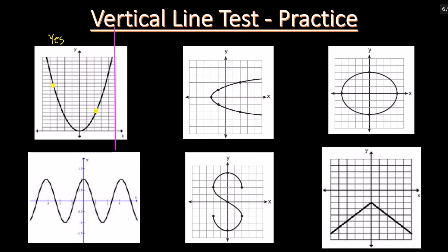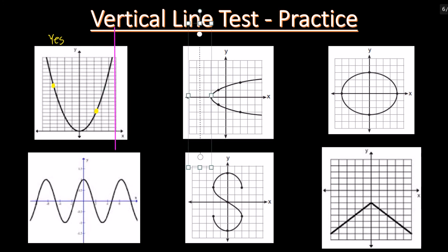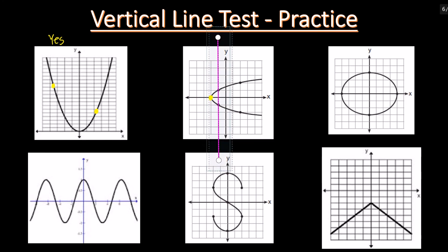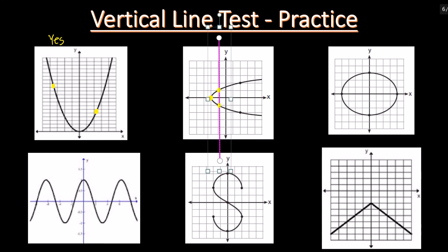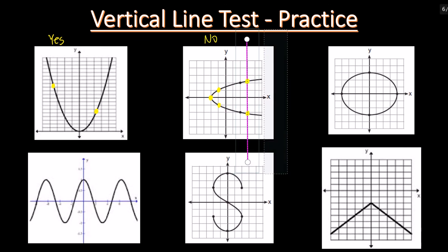Let's look at the second graph. Place the vertical line at the left side — here it has one intersection. Continue moving, and the vertical line intersects the graph twice, so it's not a function.